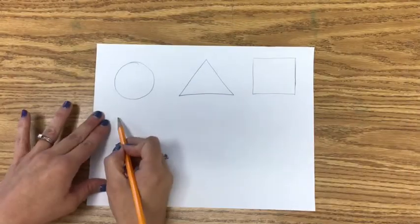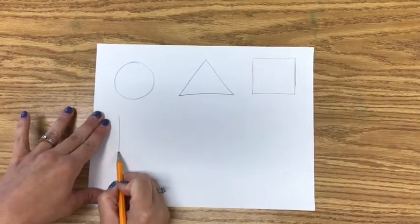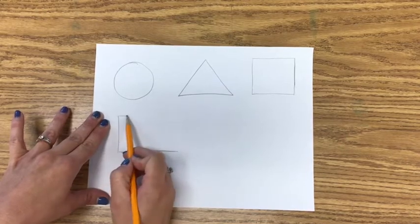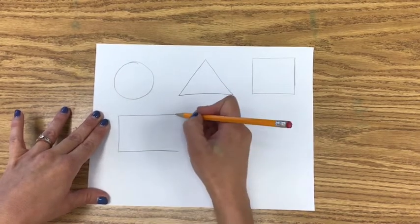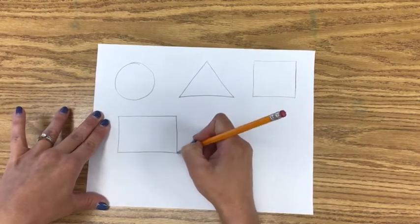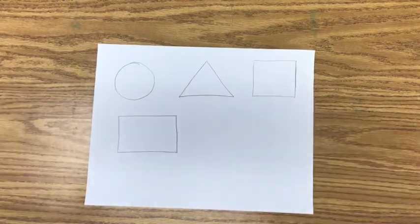Now let's try a rectangle. A rectangle is made just like a square, except two of the sides are longer than the other two. Now you try to draw the rectangle on your paper.